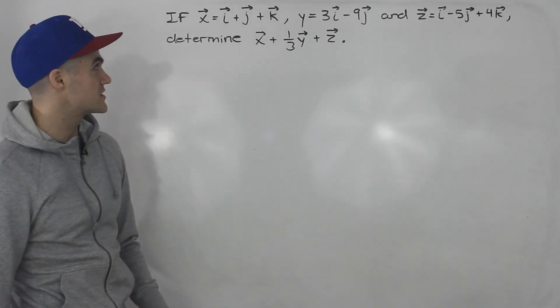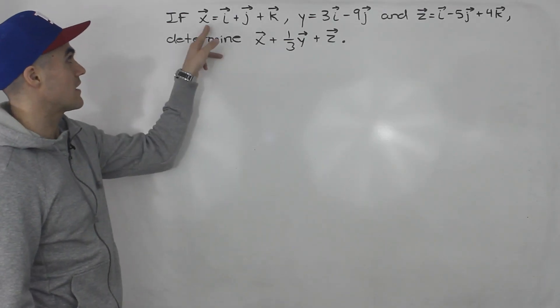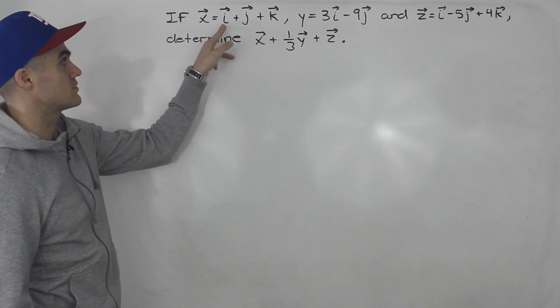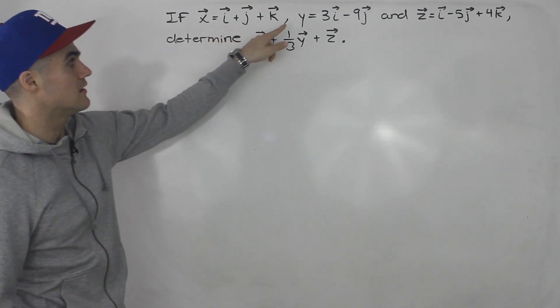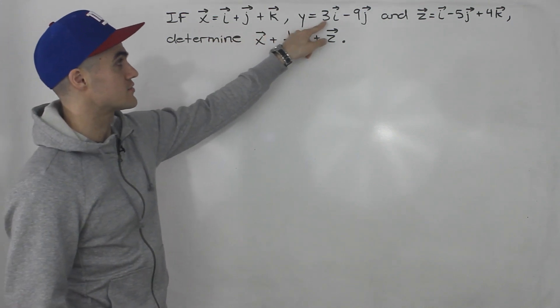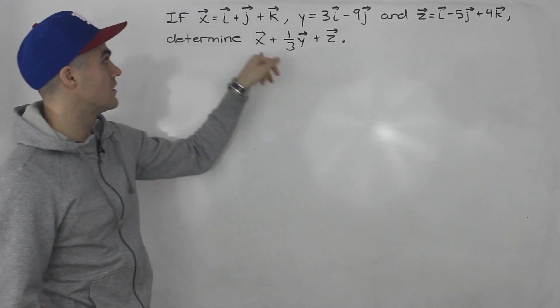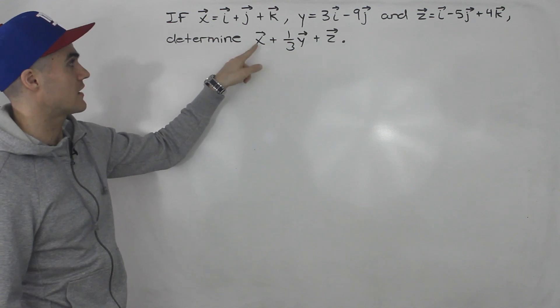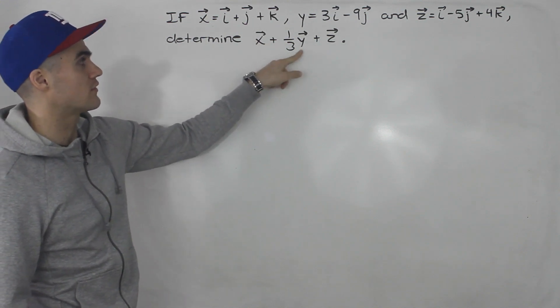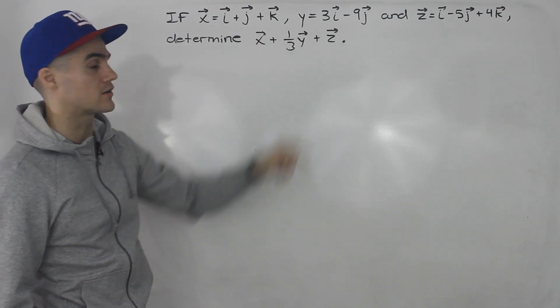Welcome back everybody. Moving on to the next question. Let's say we have vector x equal to i plus j plus k. Vector y is 3i minus 9j and z is equal to i minus 5j plus 4k. We have to determine the vector x plus one third of the vector y plus the vector z.